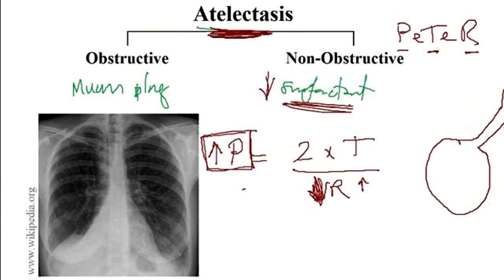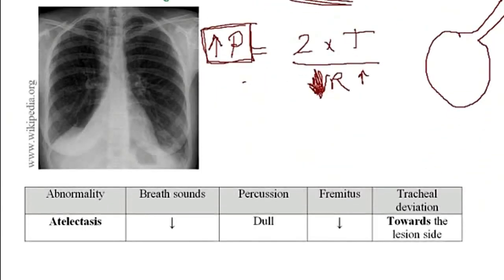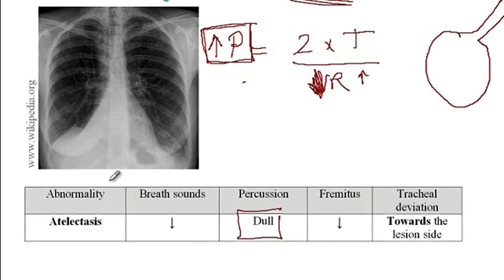The findings in atelectasis: since part of the lung has collapsed, there are decreased breath sounds and decreased transmission of vibrations. On percussion there is dullness. Since part of the lung has collapsed and new space has opened up, the trachea deviates towards the lesion site.